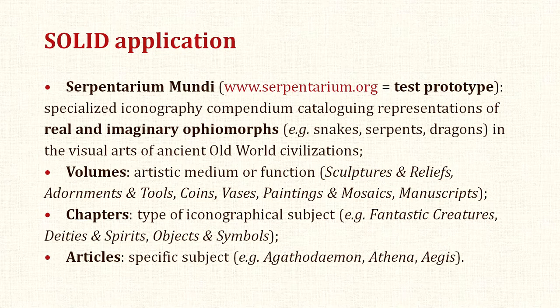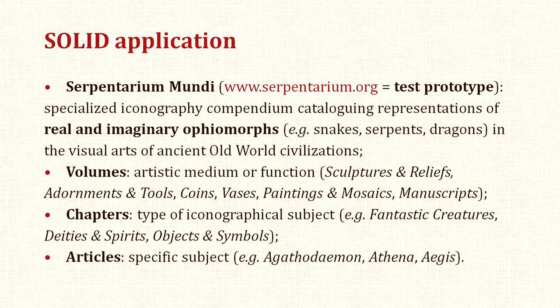Currently, the Serpentarium Mundi website serves as the SOLID's limited-functionality test prototype. The compendium's compositional framework uses the structural metaphor of traditional media and consists of six volumes organized according to artistic medium or function: sculptures and reliefs, adornments and tools, coins, vases, paintings and mosaics, and manuscripts. The volumes represent the full range of arts, gradually advancing from the three-dimensional to the two-dimensional.